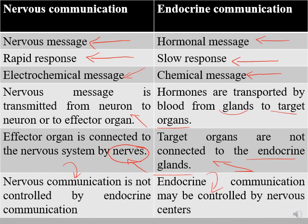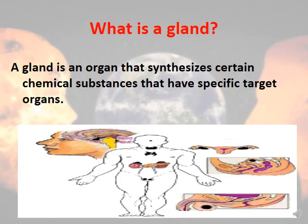What is a gland? A gland is an organ that synthesizes or produces certain chemical substances. These substances are hormones, and they have specific target organs.